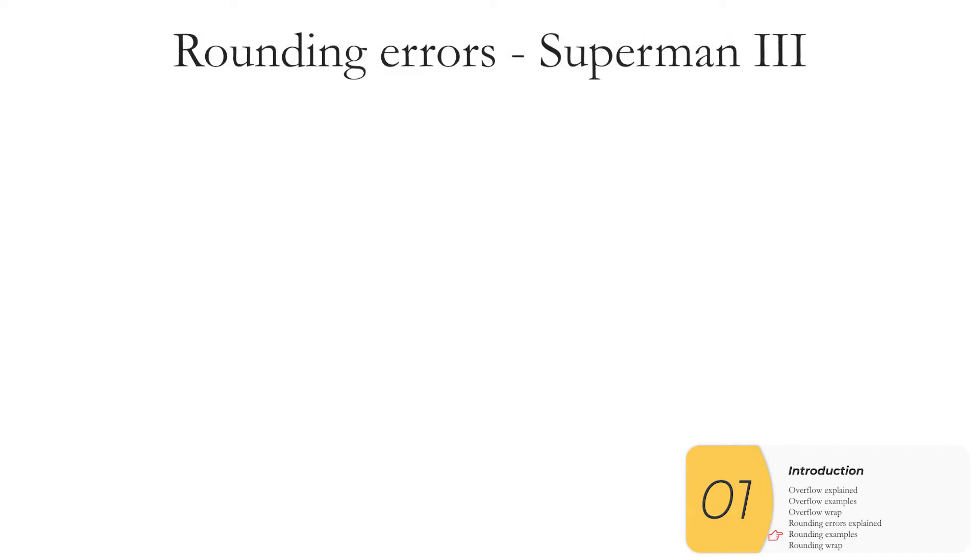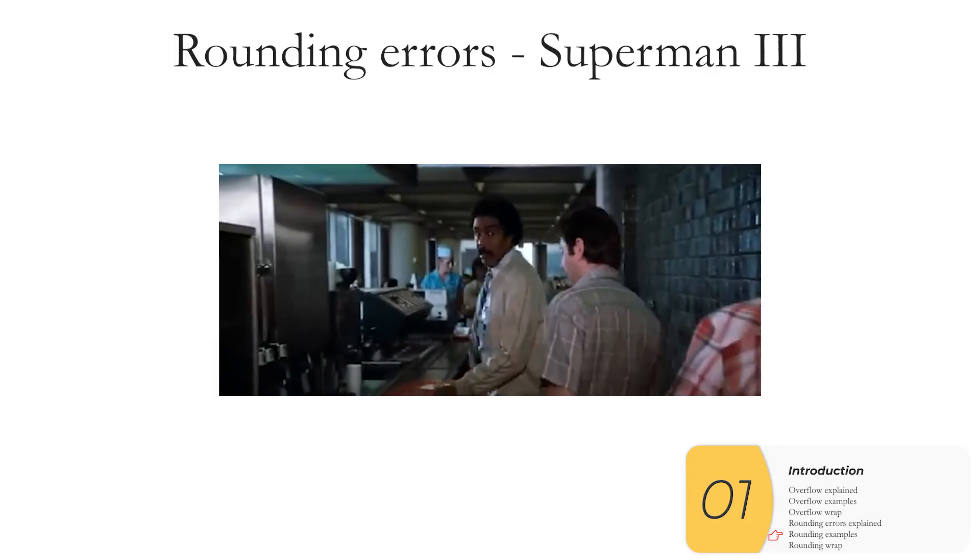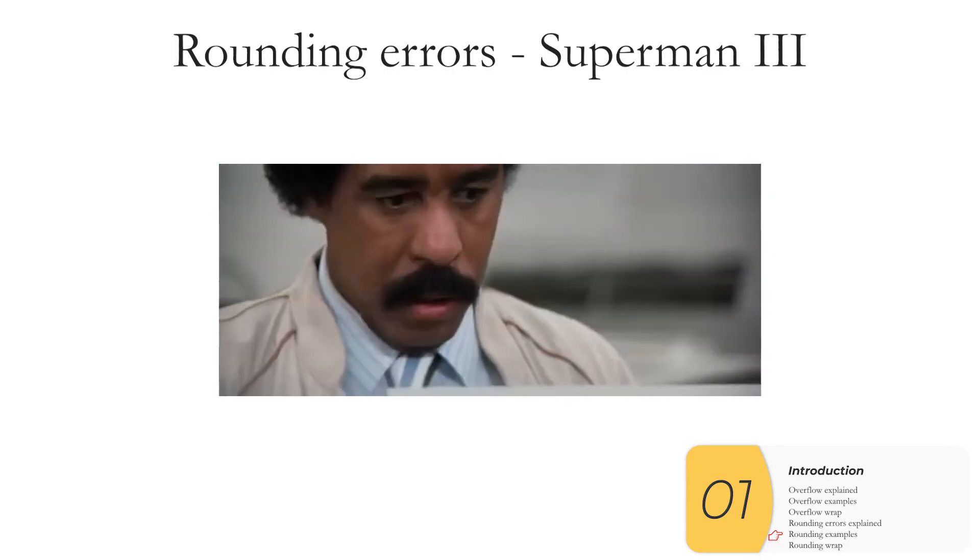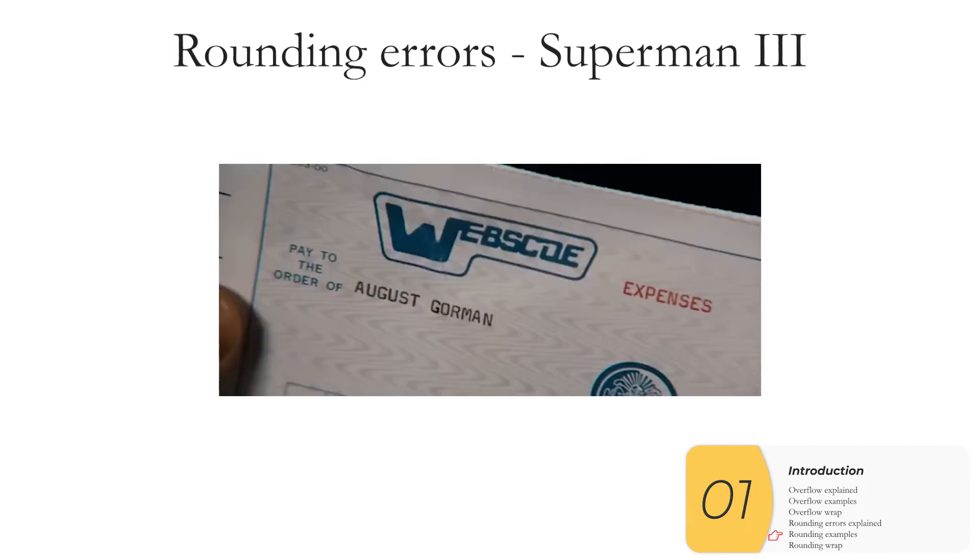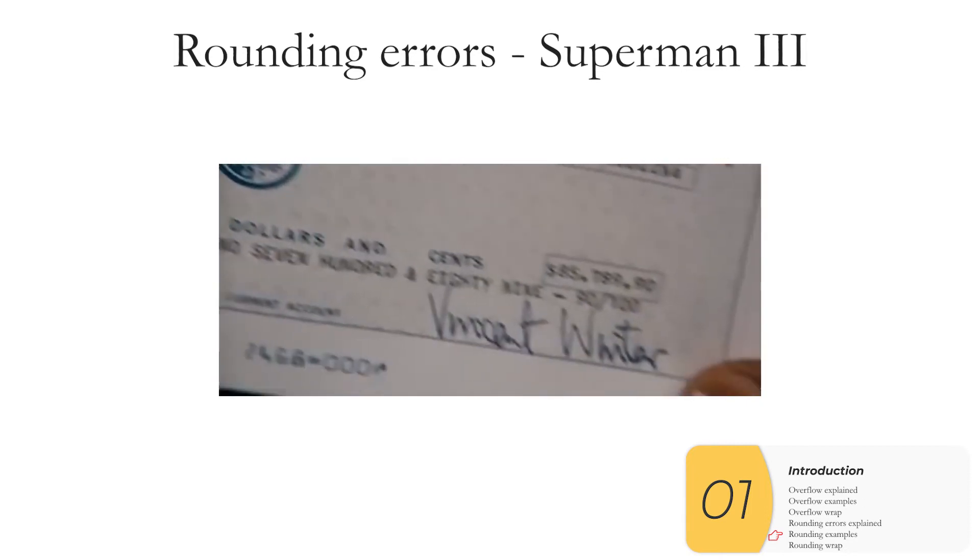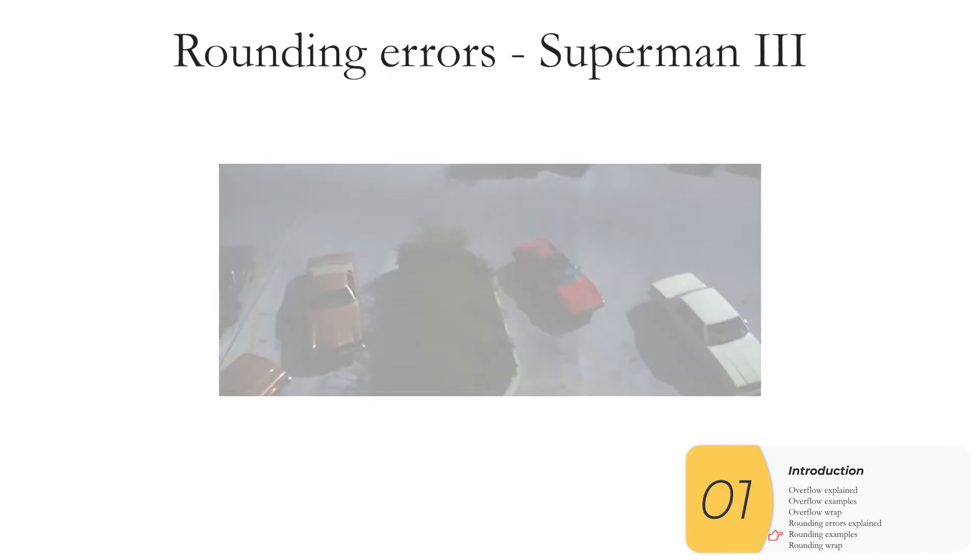Rounding errors were even the subject of a movie, Superman 3, where the company has half pennies, quarter pennies. And the character, played by Richard Pryor, asks the question: And what happens to all the half pennies? He hacks the computer. He takes all these half pennies. And soon enough, he's driving around in a Ferrari.